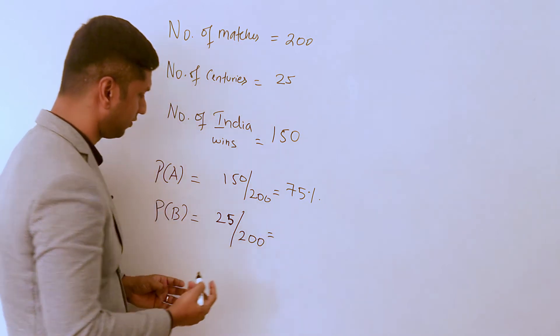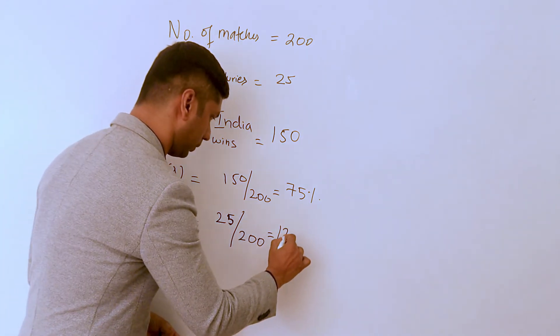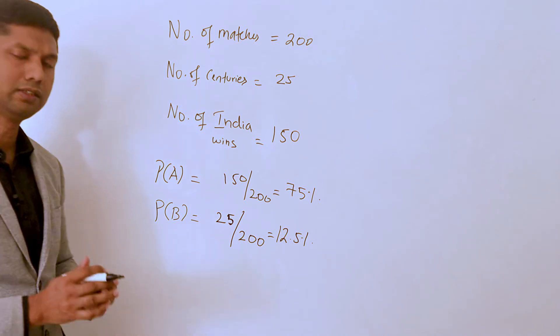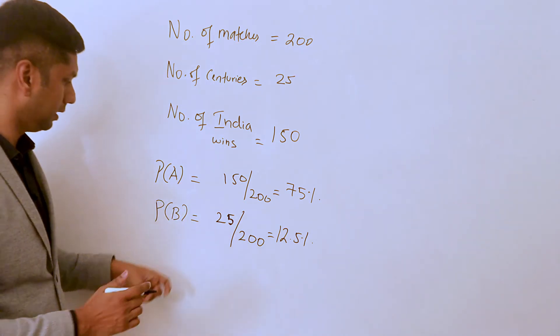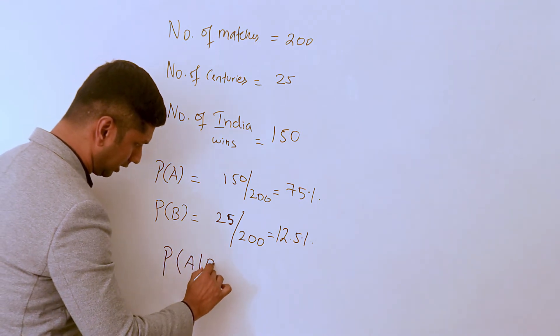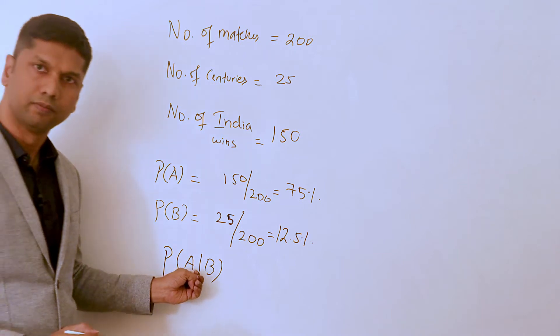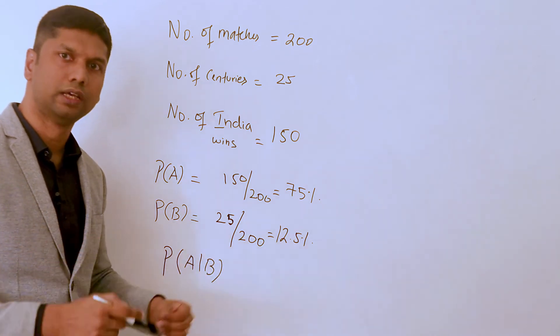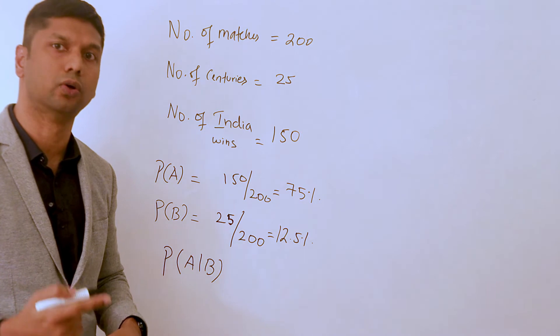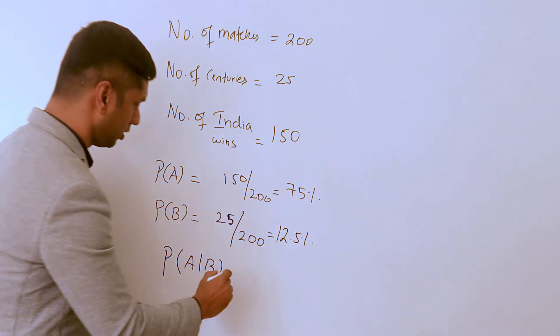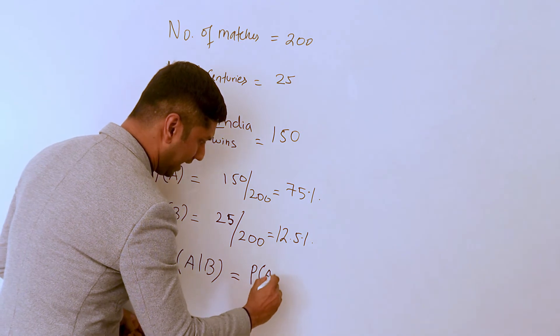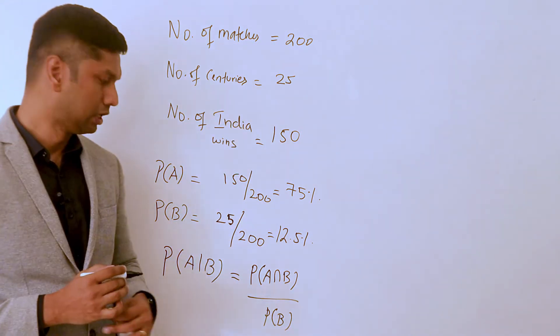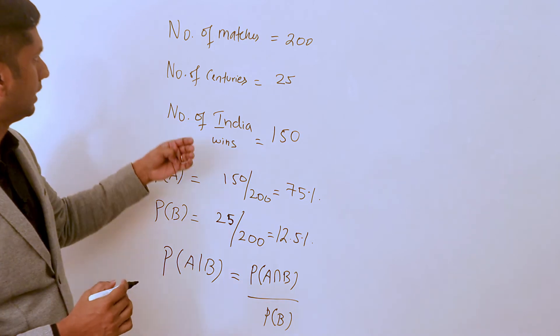Conditional probability is like this: probability of A given B - we write it with a vertical line. What is the probability India will win the match if Rohit Sharma had already scored a century? For that we use the formula: it's probability of A intersection B divided by probability of B.